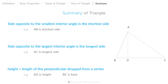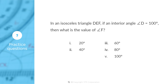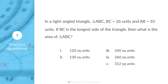Now that you are familiar with the properties of the triangle, let's put your learning to a test. Question 1: In an isosceles triangle DEF, if an interior angle D equals 100 degrees, then what is the value of angle F? Options: 20, 40, 60, 80, or 100 degrees? Question 2: In a right angle triangle ABC, BC equals 26 units and AB equals 10 units. If BC is the longest side of the triangle, then what is the area of triangle ABC? Options: 120, 130, 240, 260, or 312 square units. Check out the detailed solution by clicking on the link available in the description.